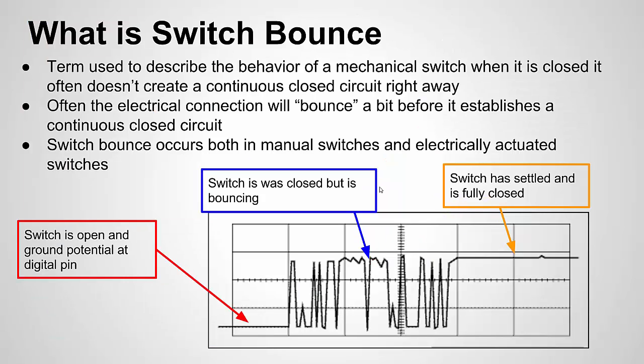So what is switch bounce? Switch bounce happens in mechanical switches — this could be a mechanical switch or push button that you operate by hand, or it could be an automated or electrically controlled switch like an armature relay. When you close the switch, for a brief moment it makes contact but vibrates or bounces off the other contact, causing the electrical connection to open and close repeatedly until it finally settles in the closed position.